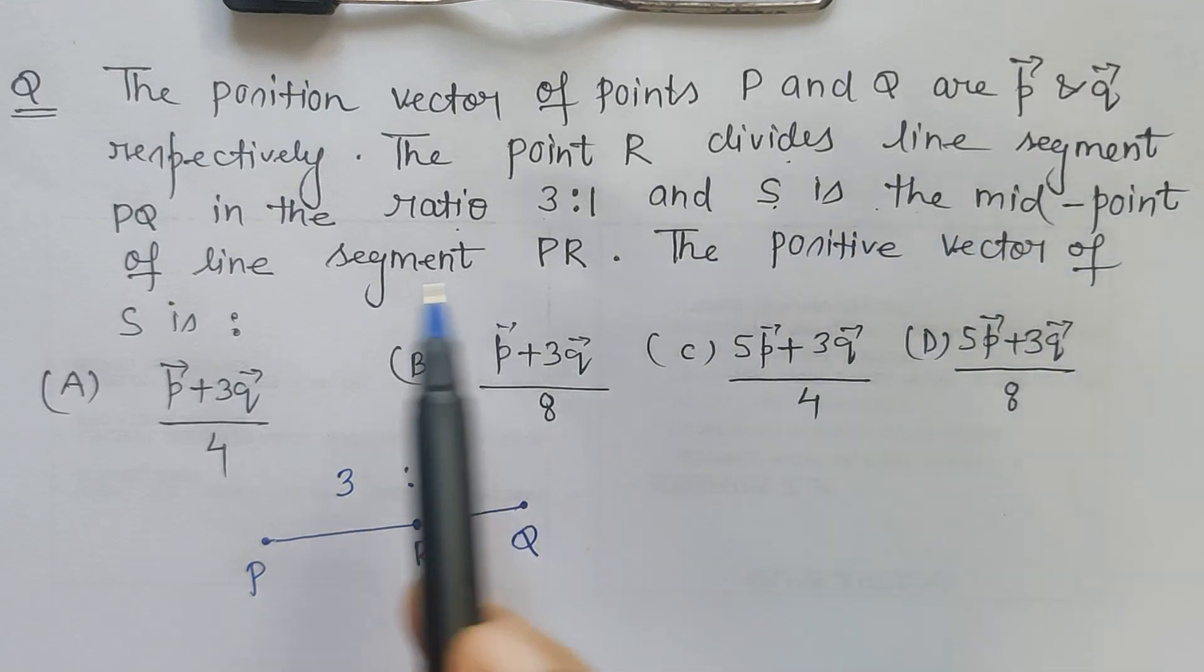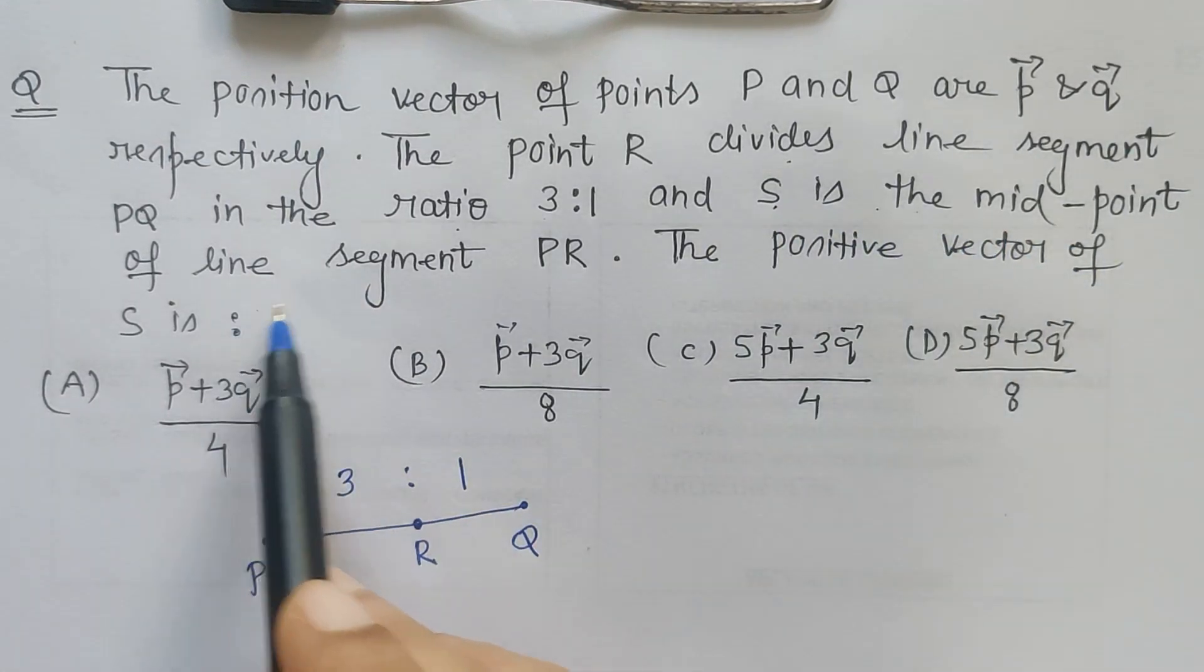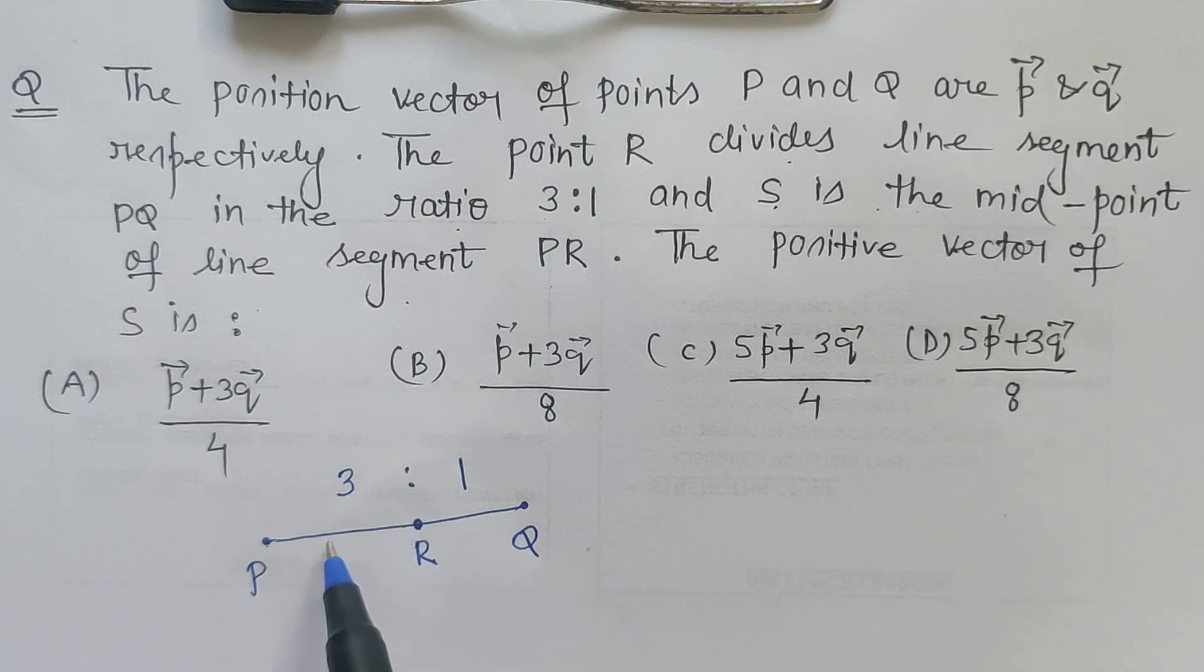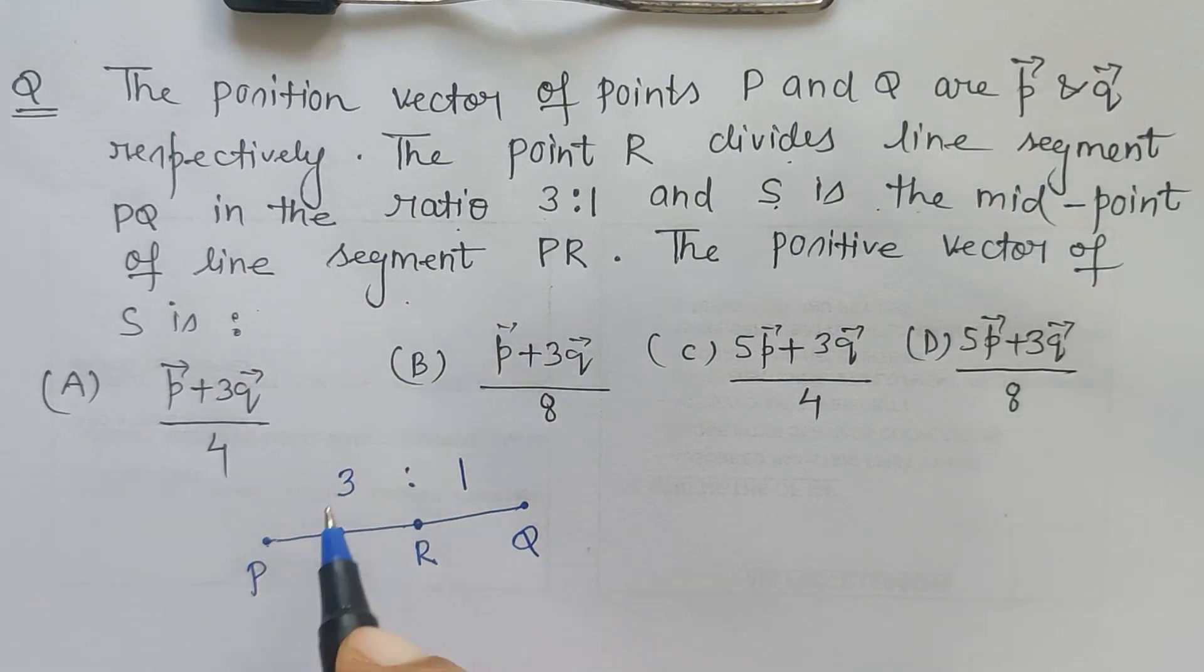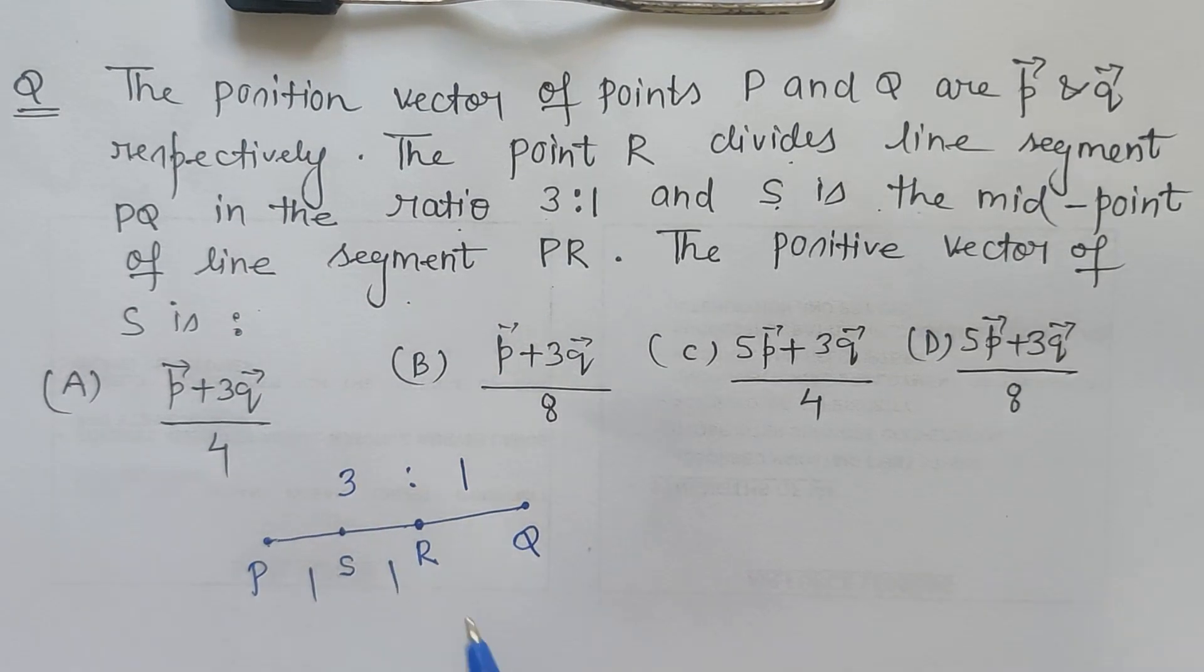And S is the point which is midpoint of the line segment PR. So this is PR and S lies exactly in the middle of PR because it divides in the ratio 1 is to 1.